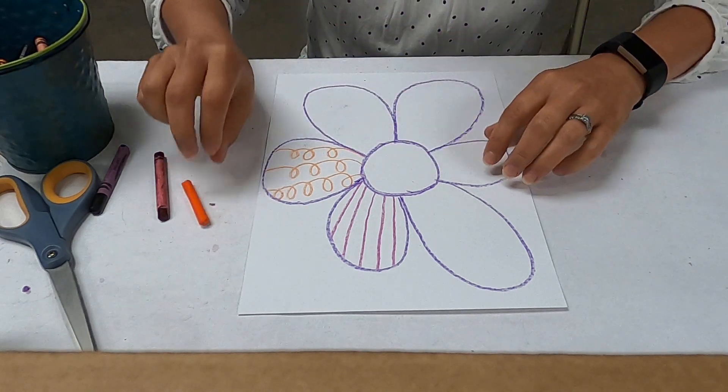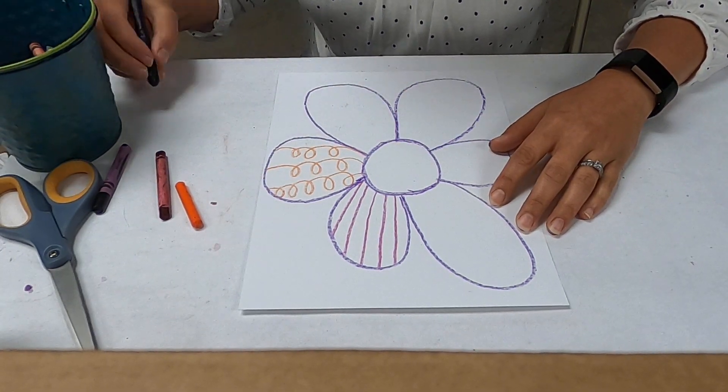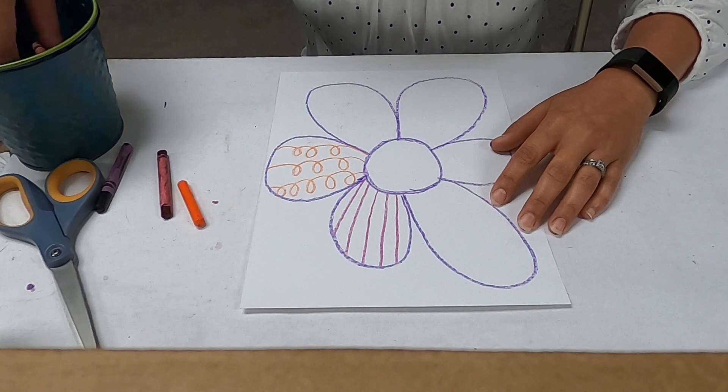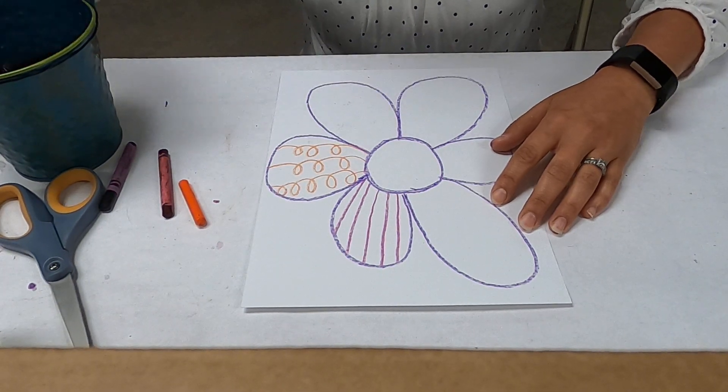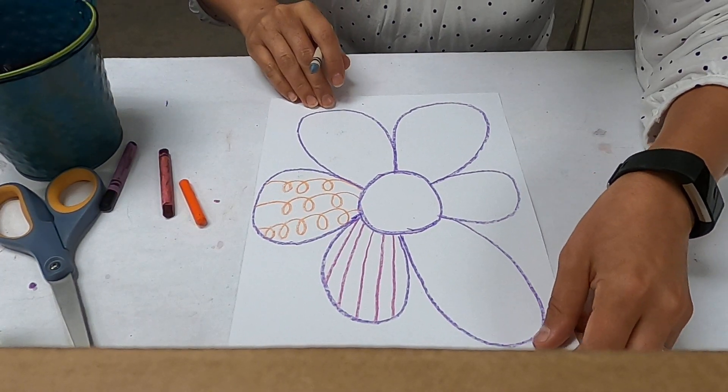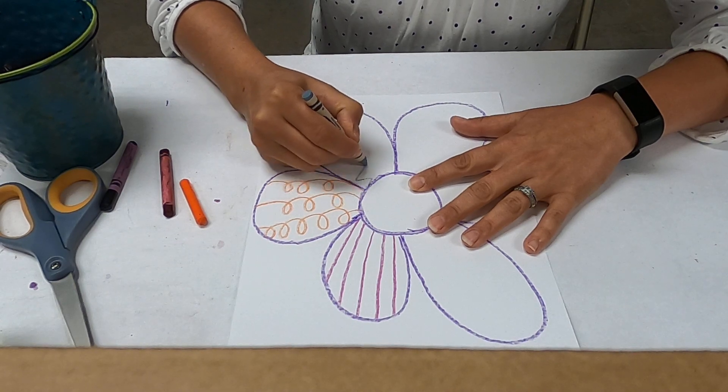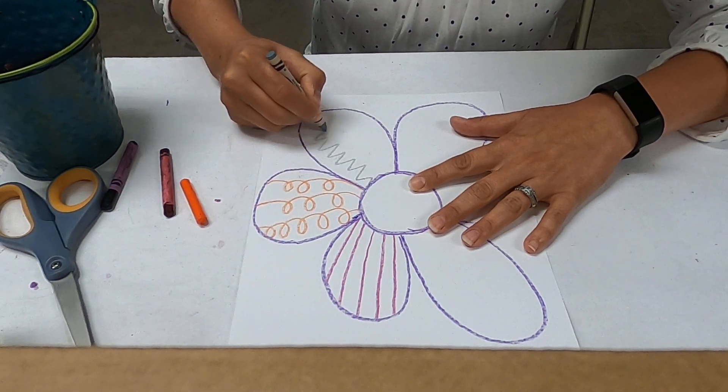And then let's see, let's choose another color. It looks pretty, gray color. And let's do maybe a zigzag, zigzag back and forth.